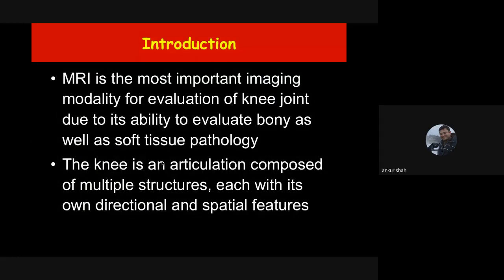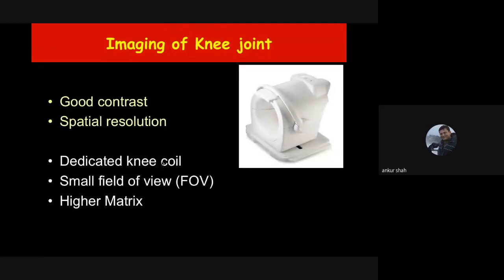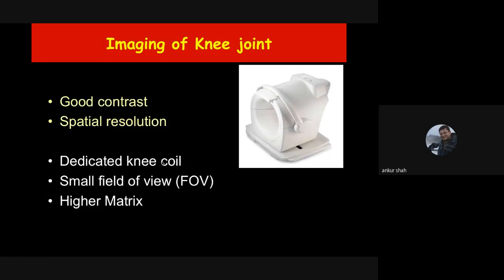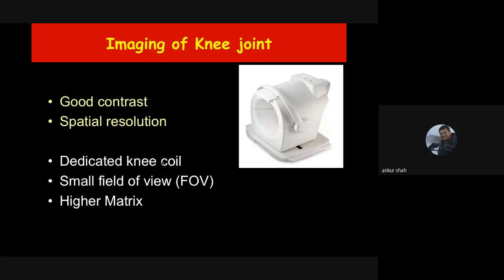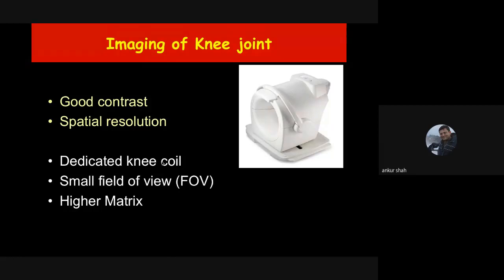MRI can give us the extent of soft tissue as well as bone injuries. Some prerequisites for MR imaging include a good MR magnet — currently almost all magnets are at least 1.5 Tesla strength, some are 3 Tesla, and with 3 Tesla we get even better resolution, though 1.5 Tesla is sufficient for most practical purposes.